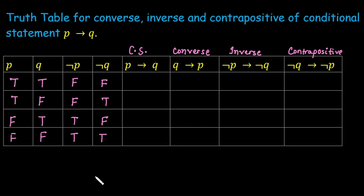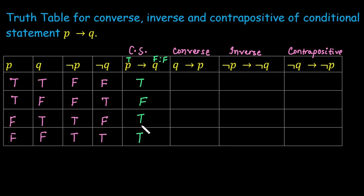We already covered that P implies Q is false only in one case — when P is true and Q is false. Identify where P is true: that's the first and second case. Corresponding to that, Q must be false to get a false statement — Q is false only in the second case. So only in the second case is the conditional statement false; otherwise it is true.